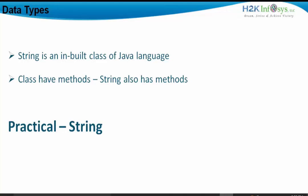That is why when we declare variables as a string, we don't say it is a string data type — we call it that the variable is of string type. And since string is an inbuilt class of Java, string will have methods. It's a common concept that any class will have methods as far as object-oriented programming is concerned, and since Java is object-oriented programming, it follows the same concept that every class will have methods.